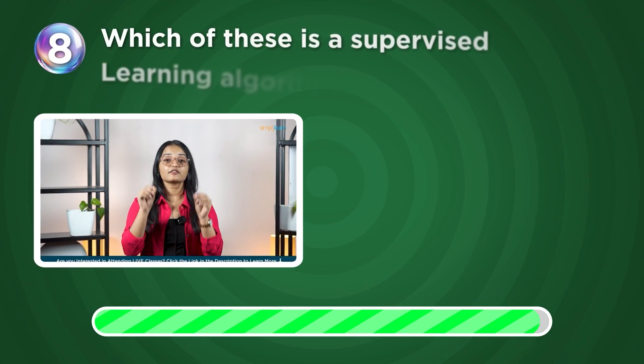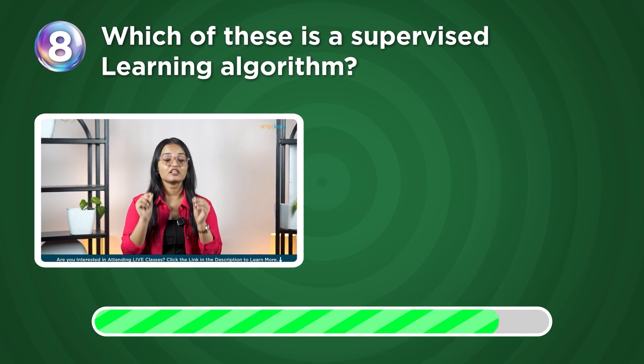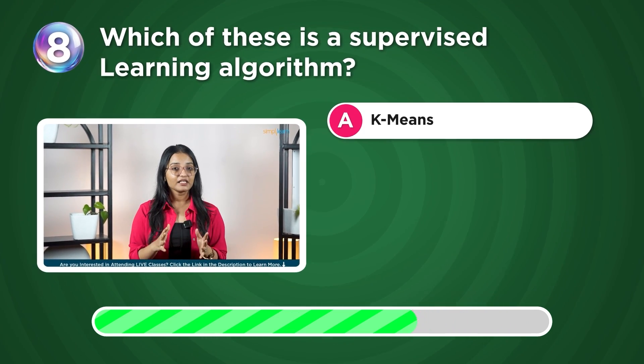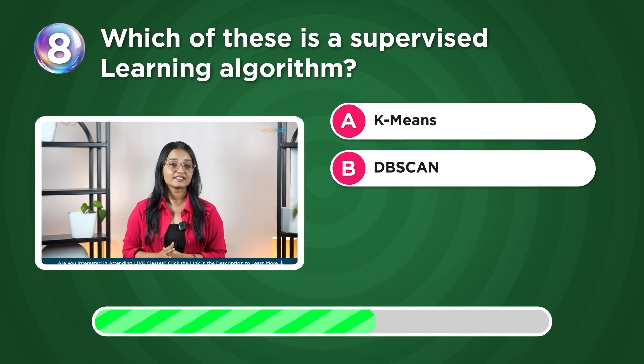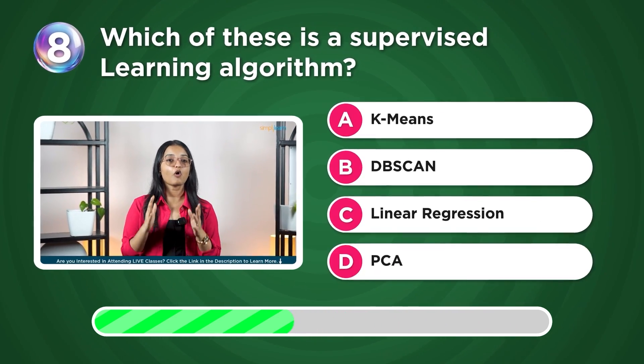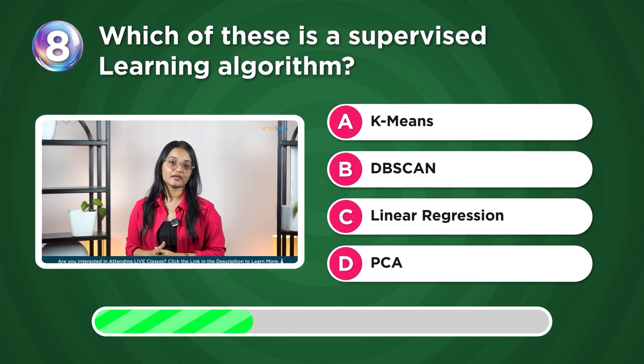Which of these is a supervised learning algorithm? K-means, DBSCAN, linear regression, or PCA?